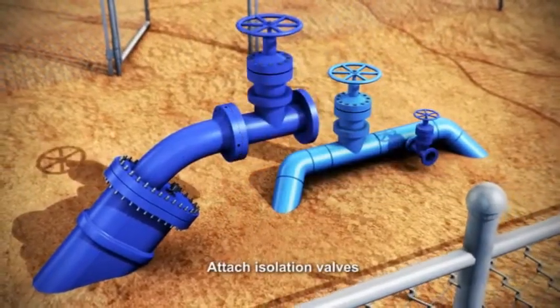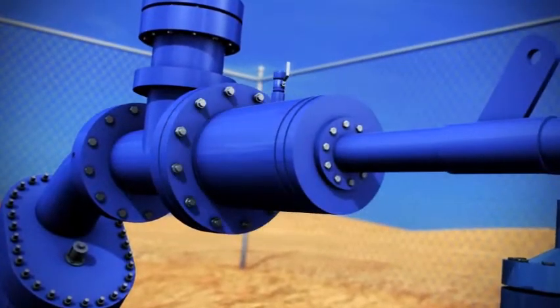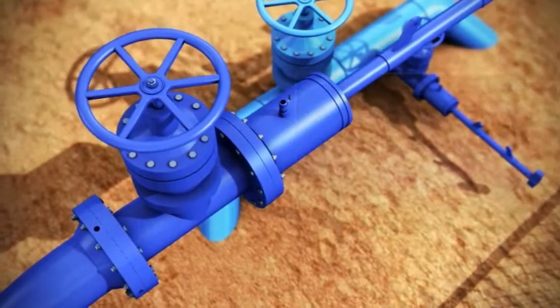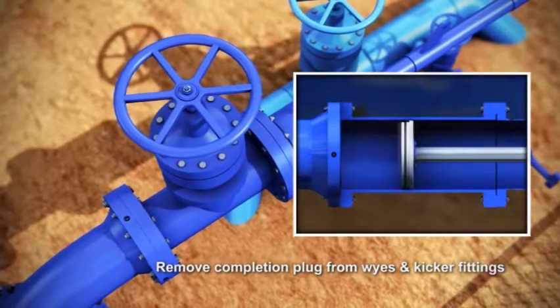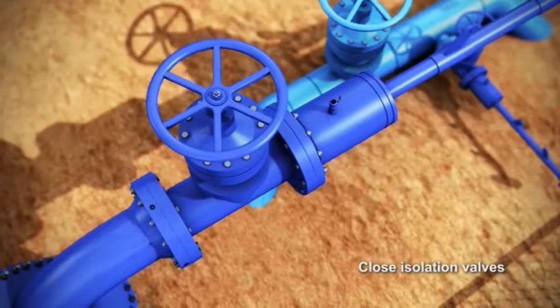The completion plug machine is bolted to the fitting. The bar is advanced and mechanically attached to the completion plug holder. The pressure is equalized, flange segments retracted and the completion plug is fully withdrawn into the housing. The isolation valves are closed and the completion plug assembly is removed.